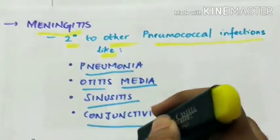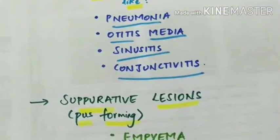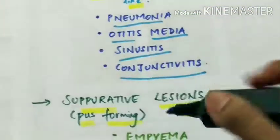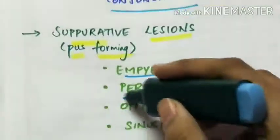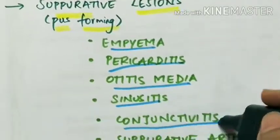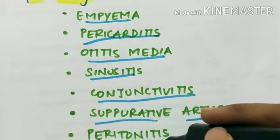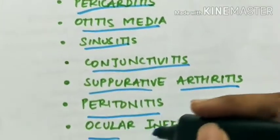Suppurative lesions can also be found. Suppurative means pus forming. So these suppurative lesions include empyema, pericarditis, otitis media, sinusitis, conjunctivitis, suppurative arthritis, peritonitis, and ocular infection.